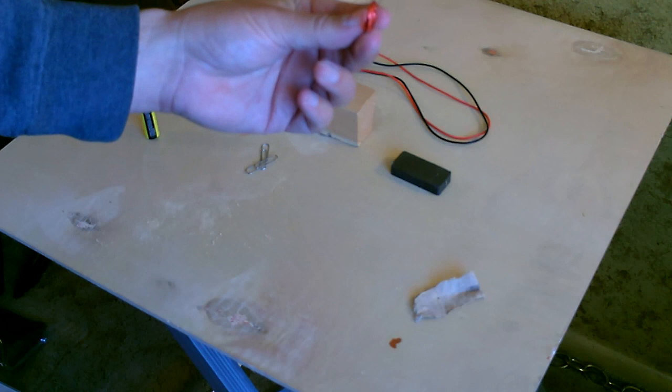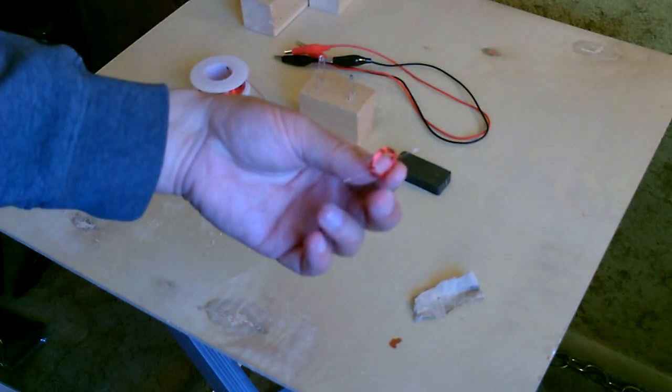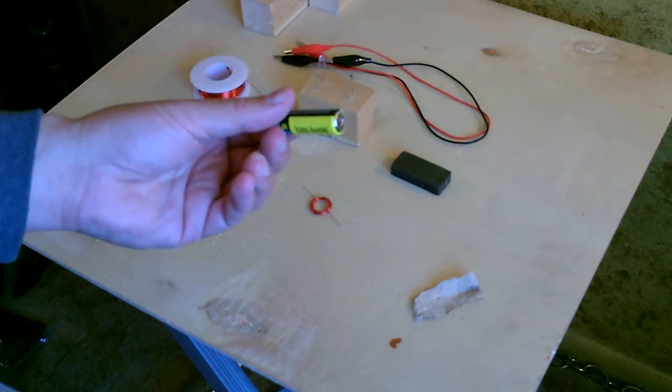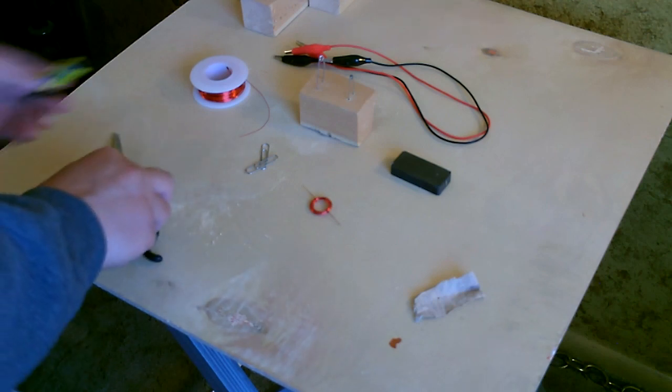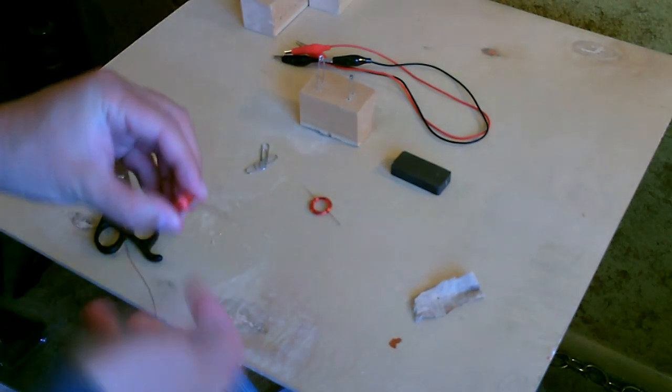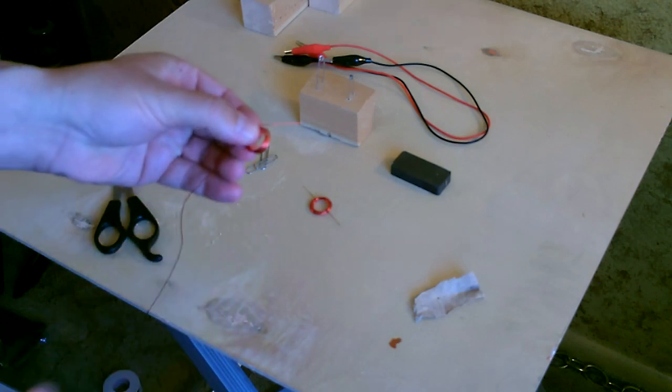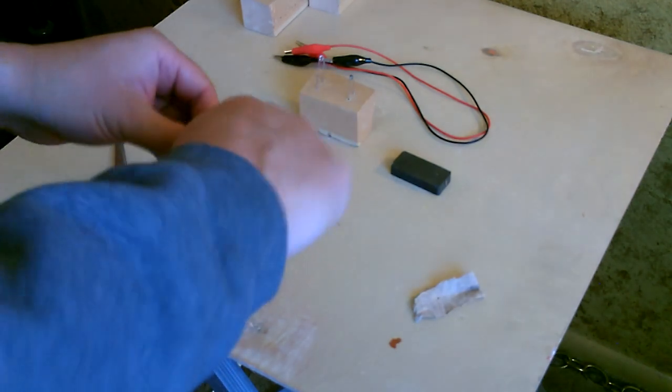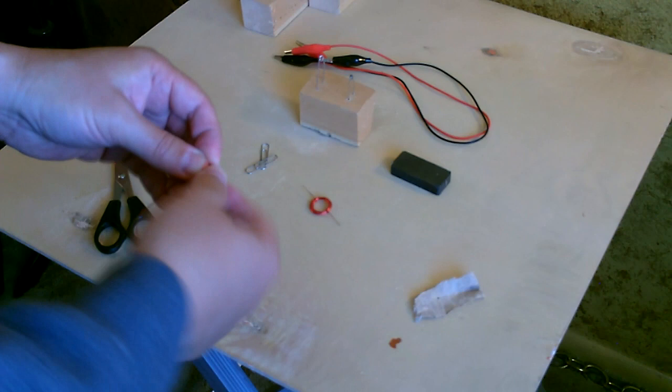Then to make this part, I just use the battery, wind the wire around it. Just go around like that and then bend the end around a couple times.